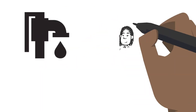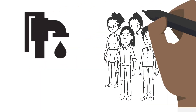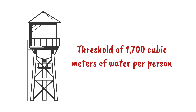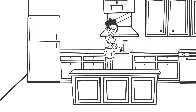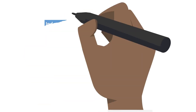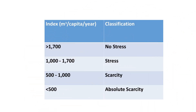Water scarcity is assessed by relating population to available water resources, where a threshold of 1,700 cubic meters of water per person has been established as the threshold for meeting water requirements for domestic, agricultural and industrial production, energy and the environment. Availability of water below this threshold is termed as water stress, while below 1,000 cubic meters represents a state of water scarcity. Anything below 500 cubic meters represents a state of absolute scarcity. This categorization is what is commonly referred to as the water stress index.